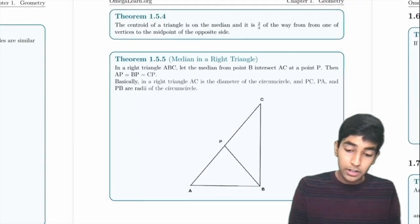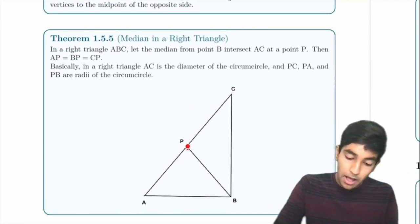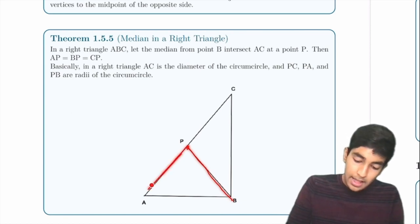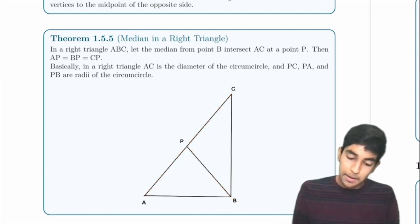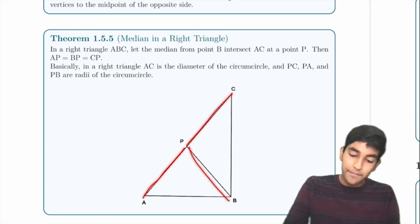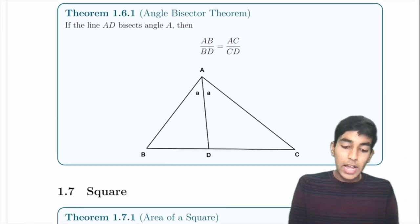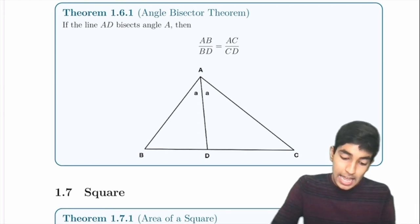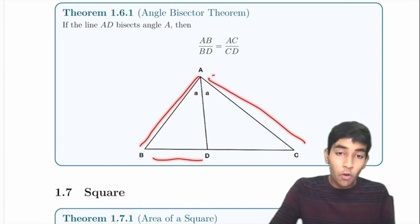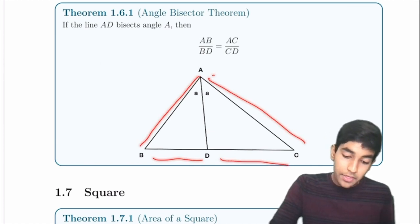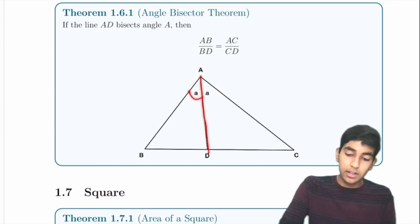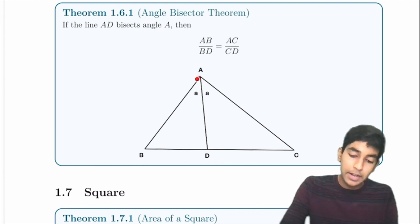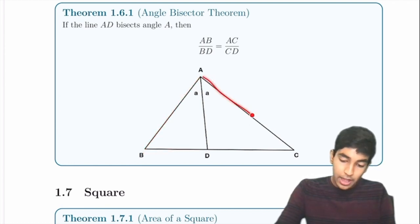Next, the median in a right triangle has a special property: if P is the midpoint of the hypotenuse, then the median from P equals half the hypotenuse — so AP = BP = CP. The angle bisector theorem states that AB/BD = AC/CD in a triangle when AD is an angle bisector, meaning it cuts the angle in half.